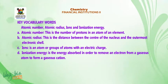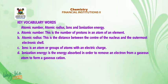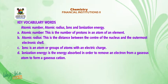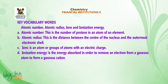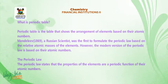Key vocabulary words are: atomic number, atomic radius, ions, and ionization energy. A. Atomic number — this is the number of protons in an atom of an element. B. Atomic radius — this is the distance between the center of the nucleus and the outermost electronic shell. C. Ions — an atom or group of atoms with an electric charge. D. Ionization energy — this is the energy absorbed in order to remove an electron from a gaseous atom to form a gaseous cation.